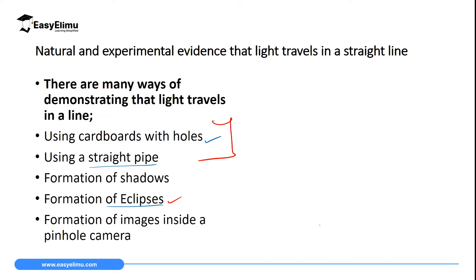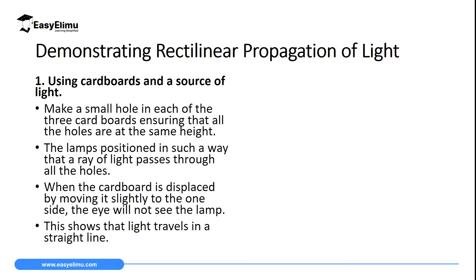We are going to perform these two in this lesson. Then we have formation of shadows, which we are going to discuss in our next lesson. Then formation of eclipses — we have discussed them in geography, but here we are going to see how light takes part in their formation. Finally, we will look at the formation of images in a pinhole camera. All of these are used to prove that light travels in a straight line. The first experiment uses cardboards and a source of light.